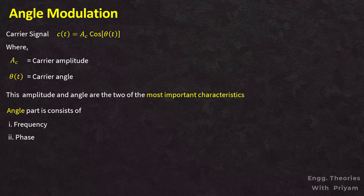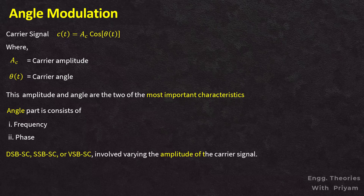By varying either of the two characteristics of the carrier signal according to the message signal, we can perform modulations. In earlier modulation techniques we have seen methods like DSBSC, SSBSC, and VSBSC, where the primary method involves varying the amplitude of the carrier signal. Now we will shift our focus towards angle modulation of the carrier signal.